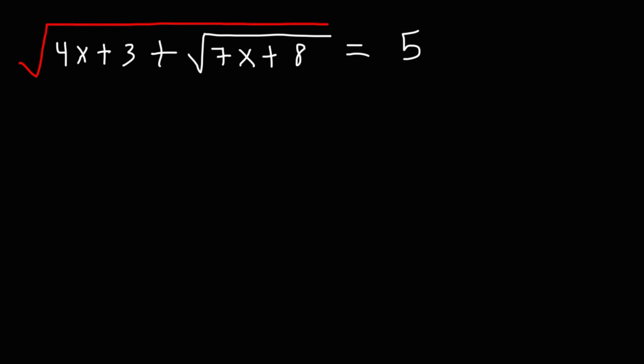Consider this radical equation. The square root of 4x plus 3 plus the square root of 7x plus 8, all of that is equal to 5. What is the value of x?